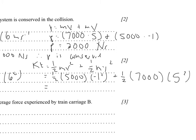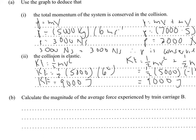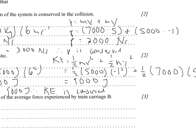And this gives you 9,000 joules. So, just like with momentum, as 9,000 joules is equal to 9,000 joules, the kinetic energy is conserved. And therefore, the collision is elastic.